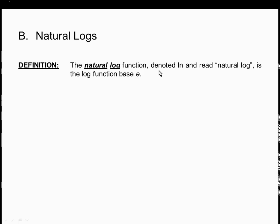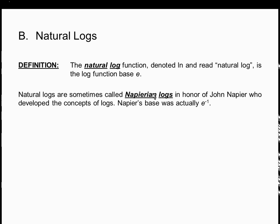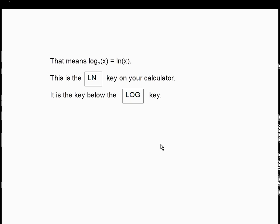Natural logs: the natural log function, denoted LN — that's an L, not an I — and read 'natural log,' is the log function base e. e is the base of the natural exponential function. Natural log functions are called Napierian logs in honor of John Napier, who developed the concept of logs. Napier's base was actually e to the negative one. We found e by compounding interest more and more times per year. Log base e of x is LN(x), using the LN key on your calculator, located below the LOG key.